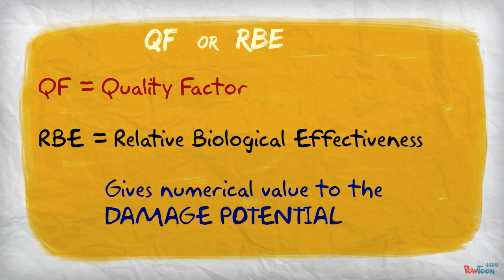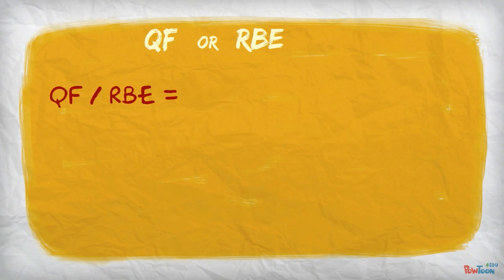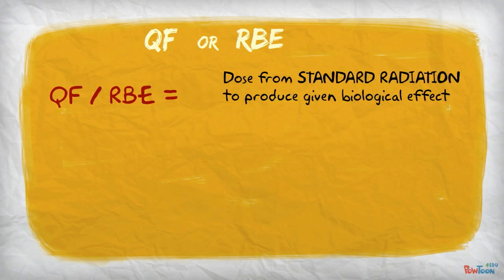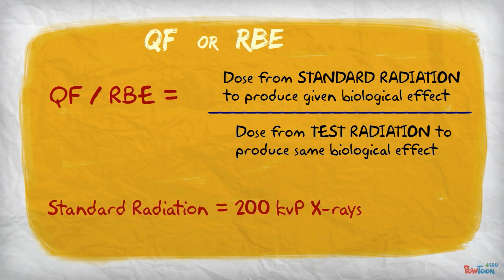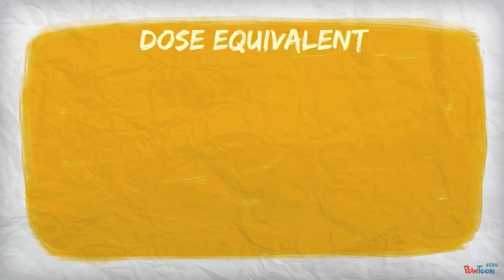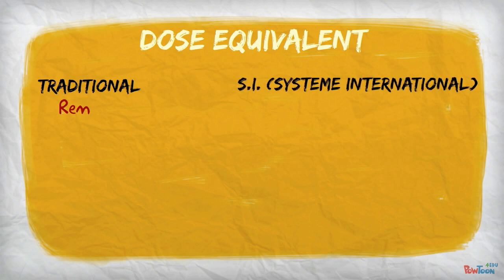To find the QF or RBE, we take the dose from a standard radiation that produces a given biological effect and divide by the dose from a test radiation that produces the same biological effect. The standard radiation used is generally 200 KVP x-rays. The units of dose equivalent are Rhe, for the traditional unit, and the SI unit is Sievert. The conversion is 100 Rhe equals 1 Sievert.